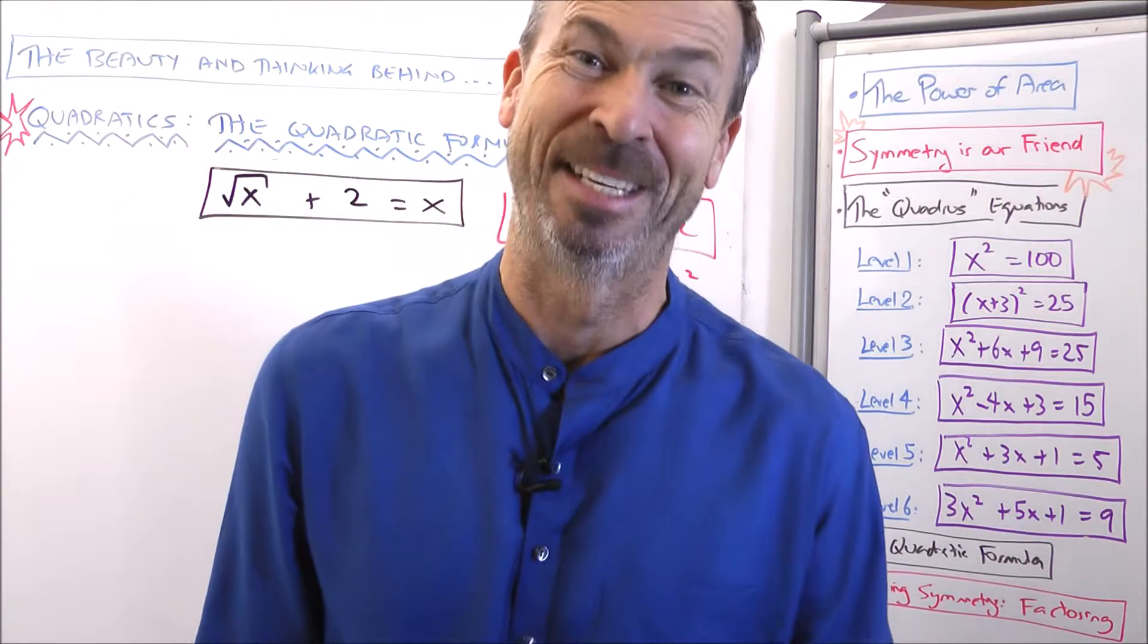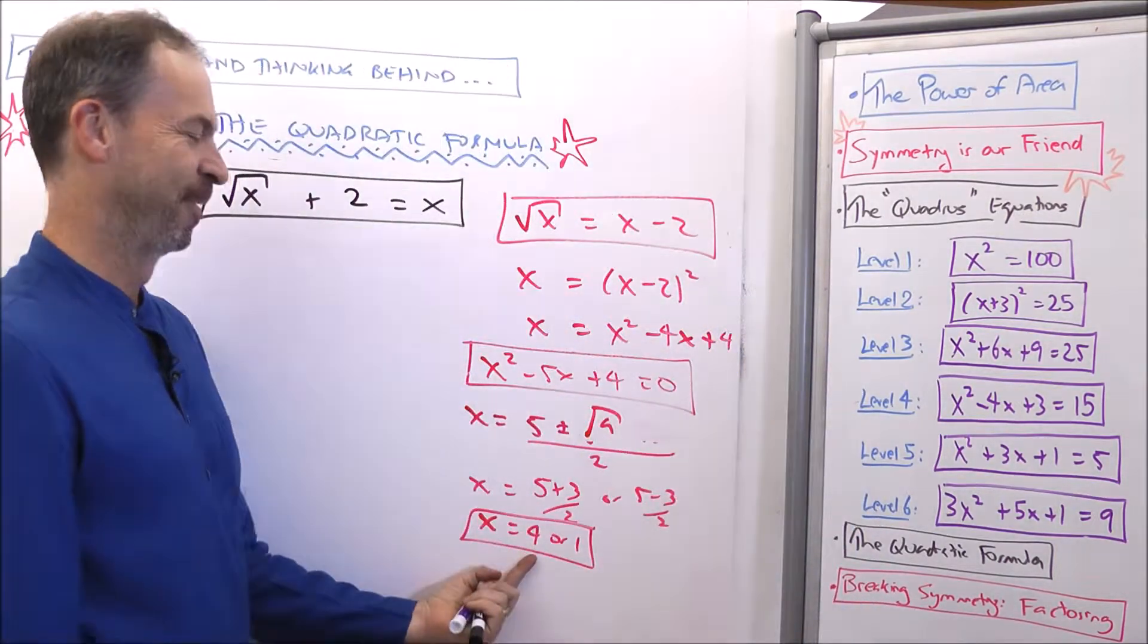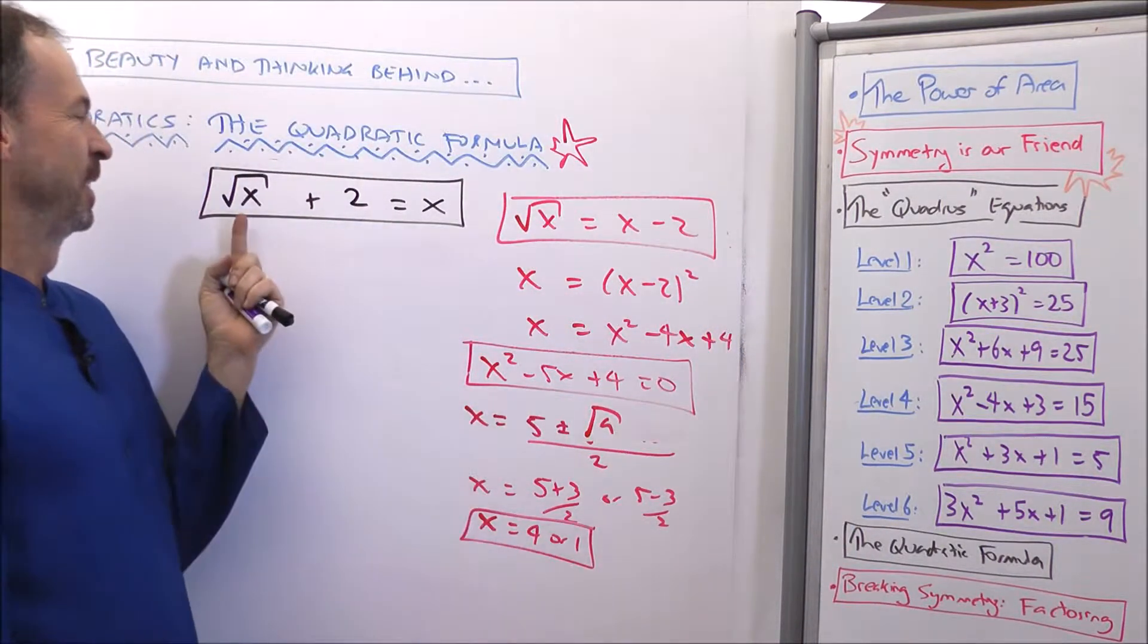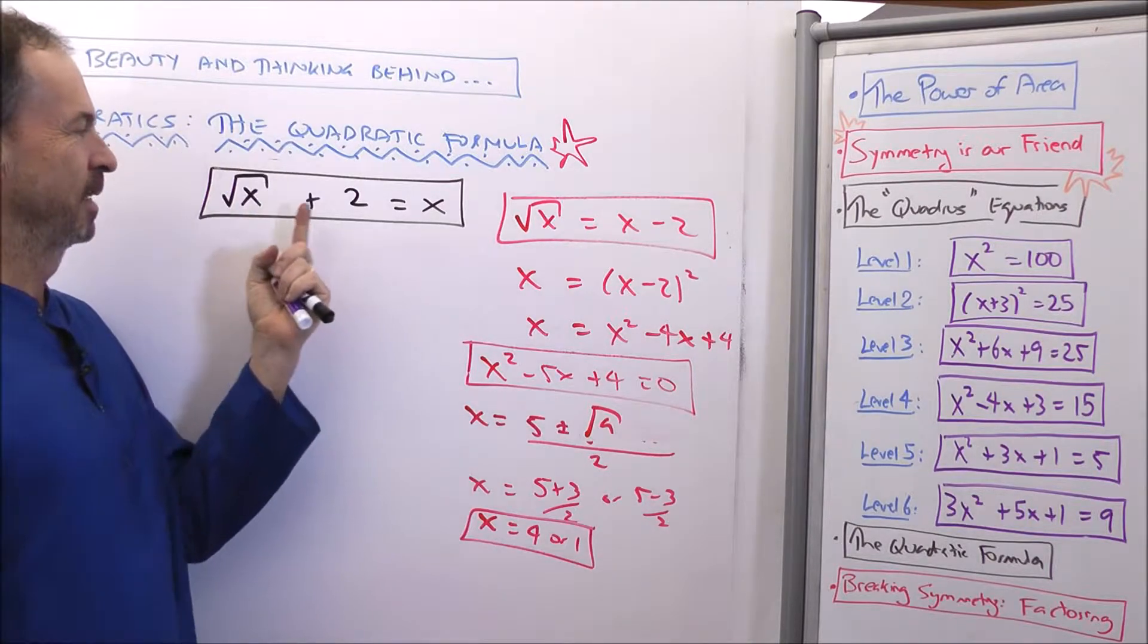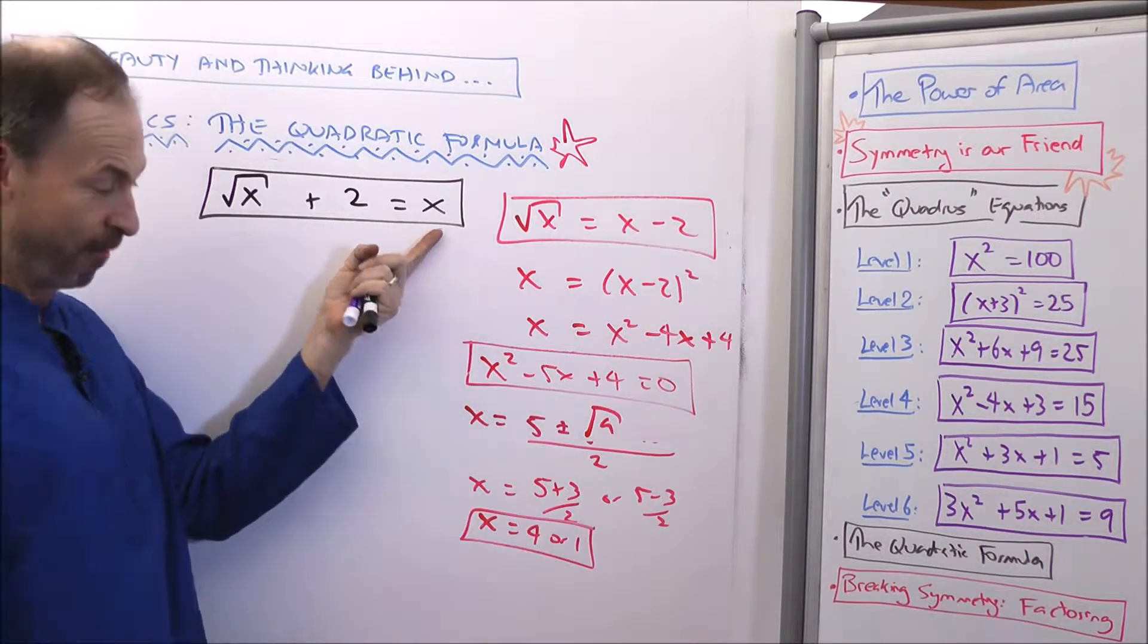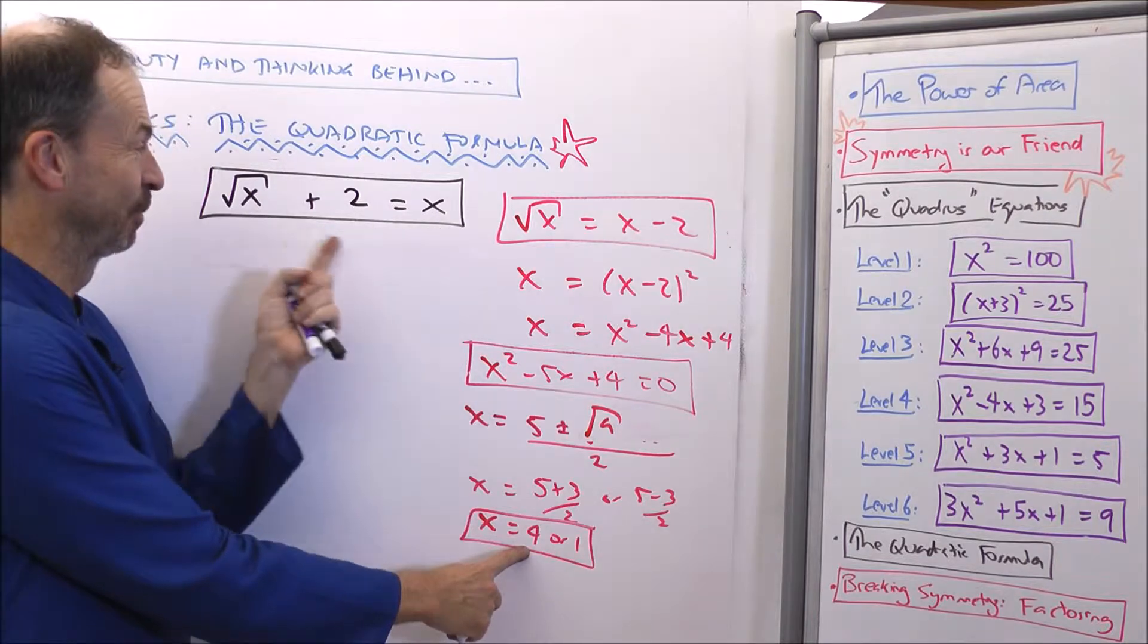But watch out. Danger. We're not done. x equals 4. Let's check it. Square root of 4. 2 plus 2 equals 4. Beautiful. x equals 4 works.